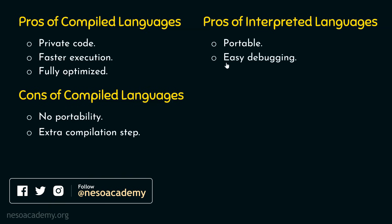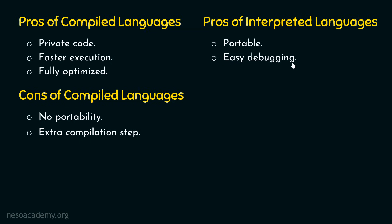The second advantage is easy debugging. Debugging means error checking, and debugging is easier with interpreted languages because the interpreter translates code line by line. Whenever there is something wrong in a line, the interpreter generates an error immediately — not after the complete interpretation of the code. It will not wait until the code is completely interpreted. We get an error immediately whenever something is wrong.